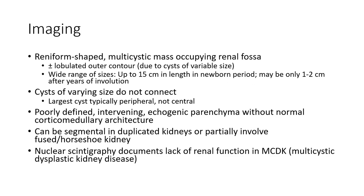Imaging shows a non-uniform multi-cystic mass occupying the renal fossa, plus or minus lobulated outer contour due to cysts of variable size. Size may be up to 15 cm in length in the newborn period, or only one to two cm after years of involution. Cysts of varying size do not connect. Large cysts are typically peripheral, not central. Fully defined intervening echogenic parenchyma without normal corticomedullary architecture; can be segmental in a duplicated kidney or partially involved in a horseshoe kidney.